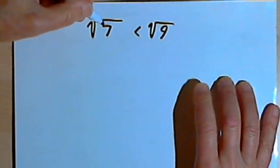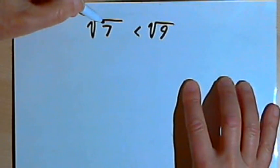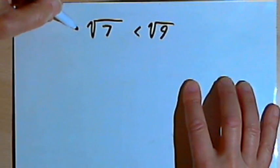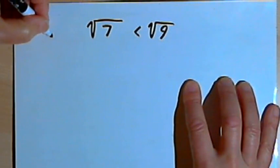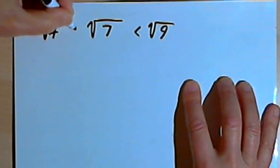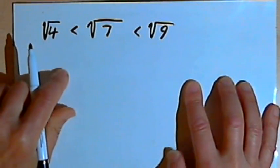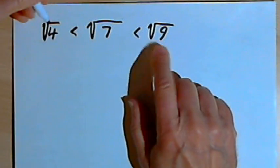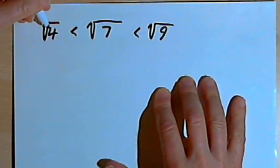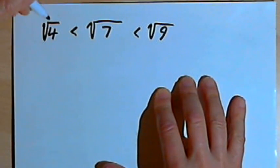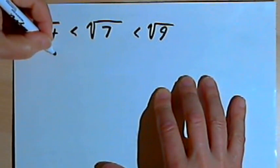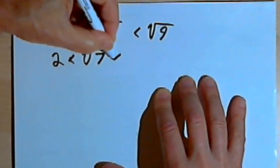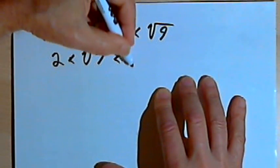Now I'm going to look on the other side of 7 — for the next smallest perfect square less than 7. 6 is not a perfect square, 5 is not, but 4 is. So since 4 is less than 7, the square root of 4 will be less than the square root of 7. Now I've got: square root of 4 < square root of 7 < square root of 9. Since 4 and 9 are perfect squares, I can take their square roots: 2 < square root of 7 < 3.